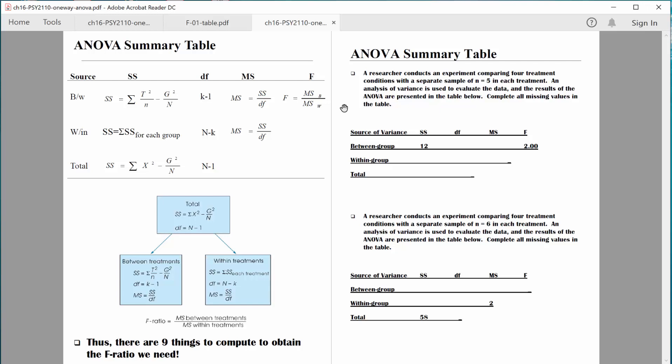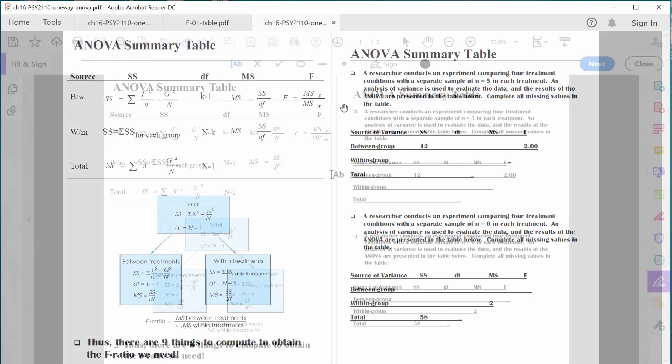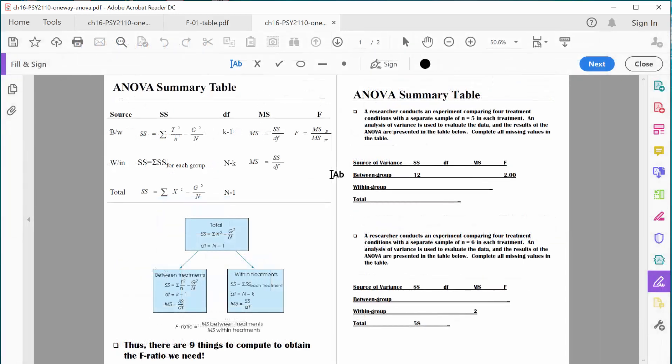An analysis of variance is used to evaluate the data, and the results of the ANOVA are presented in the table below. Complete all missing values in the table. All right, let me change my view for a second so I can type in some information, and then we'll start walking through it. I'll give you some tips and some strategies to get it done pretty easily. All right, now I'm able to type in a few things.